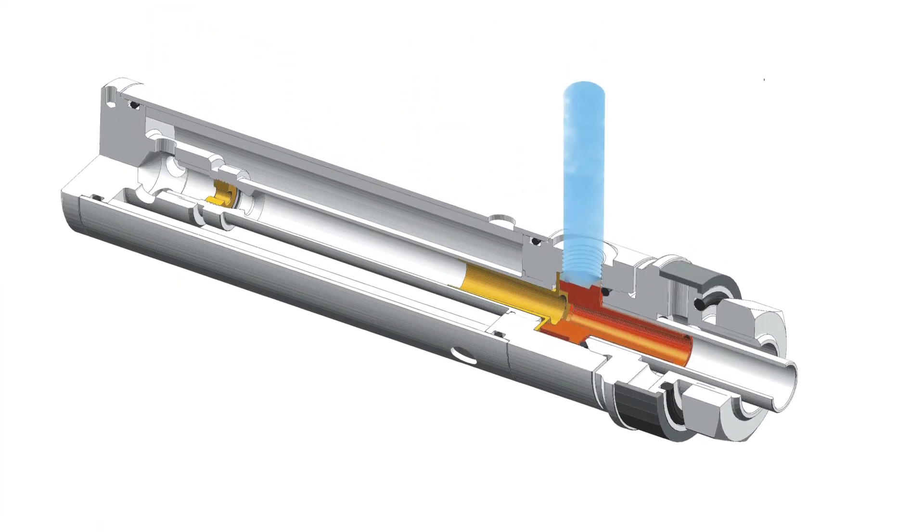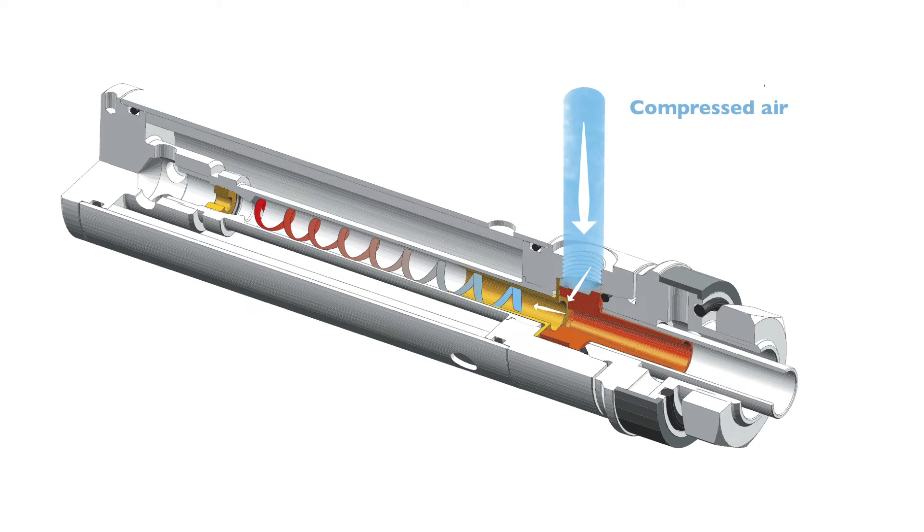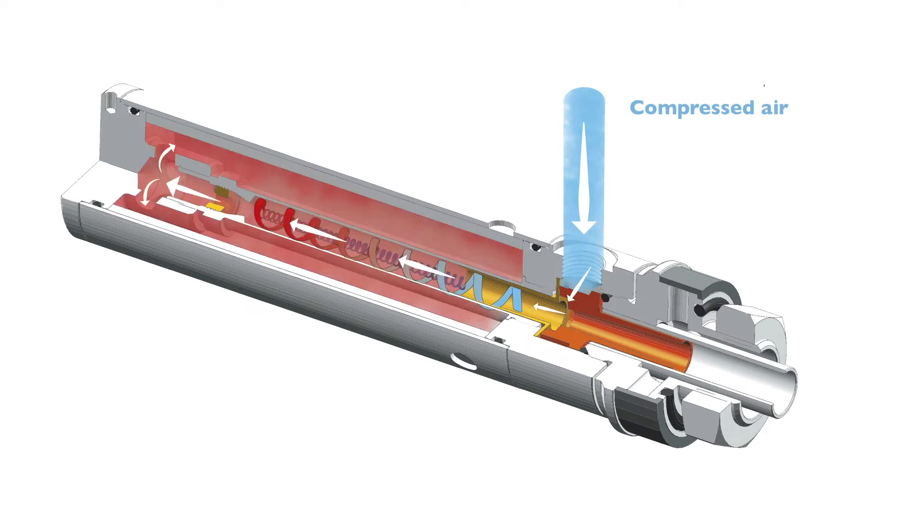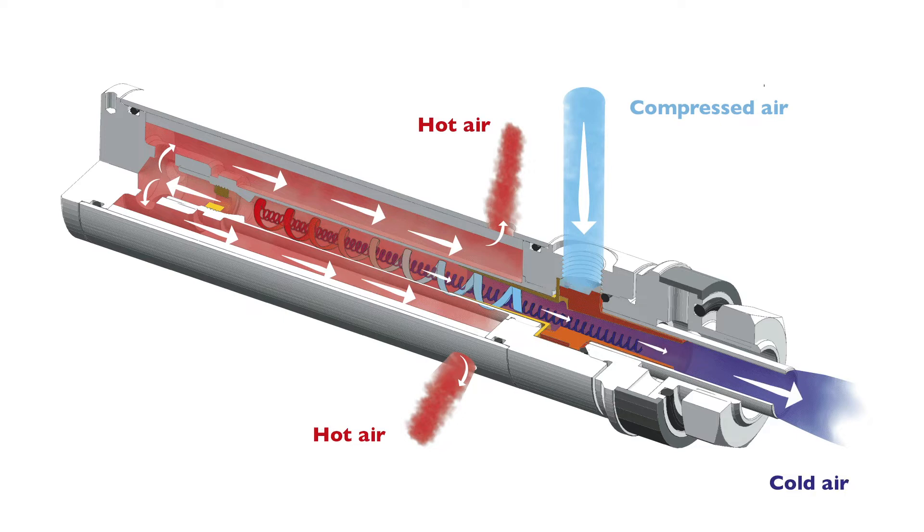The air whirls at high speed around the generator, producing a thermal shock and creating a cold air flow at the output that can reach minus 20 degrees.